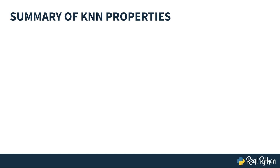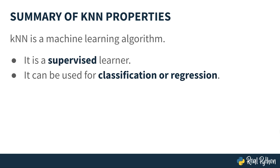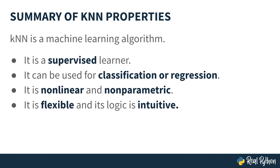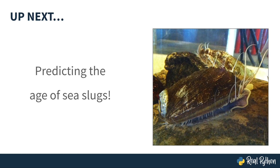In summary, KNN is a machine learning algorithm. It is considered a supervised algorithm because it learns from data with labeled target values. KNN can be used for either classification or regression problems. It's non-linear and also non-parametric, making it highly flexible and intuitive. But on the downside, KNN tends to be memory intensive and inefficient for large amounts of data, since it needs to keep the whole training set to make predictions. In upcoming videos, you'll learn how to predict the age of sea snails.